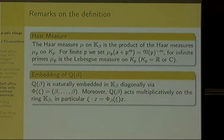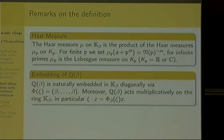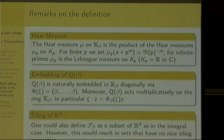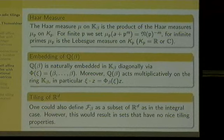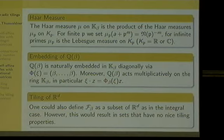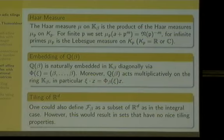Moreover, Q(beta) acts multiplicatively on the ring K_beta in an obvious way: if we multiply an element c of K_beta by an element psi of Q(beta), this just means we multiply in each coordinate. One could define a self-affine tile in R^D associated to this number system, but this object is not nice and has no tiling property. So one must go one of two ways: either forget about self-similarity and work in R^D with more complicated objects, or go to a different space containing the P-adic factors to preserve self-similarity.